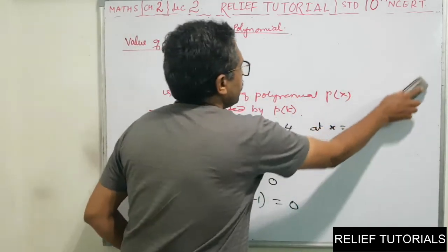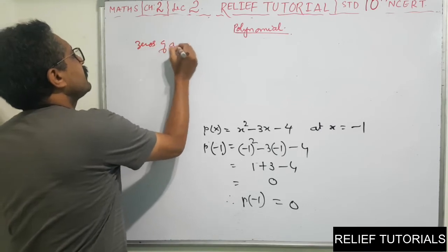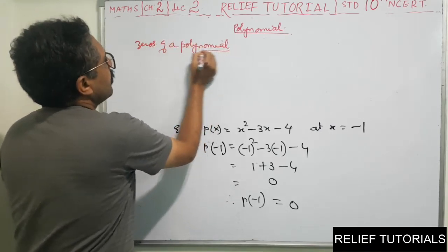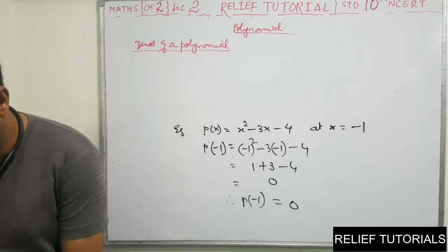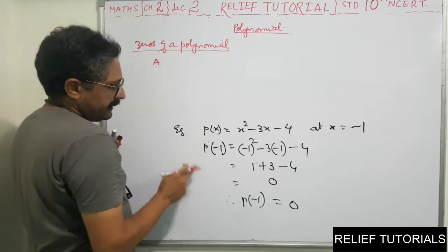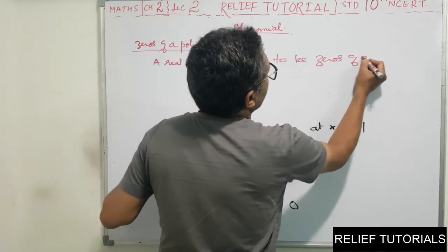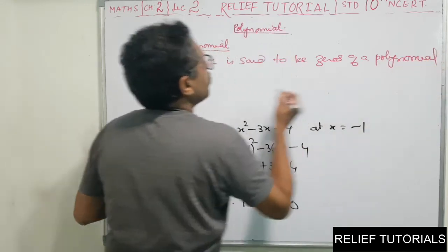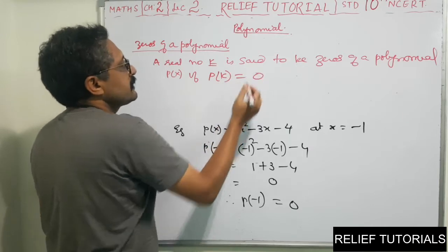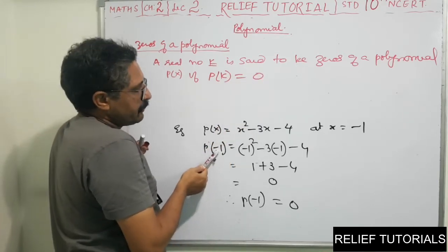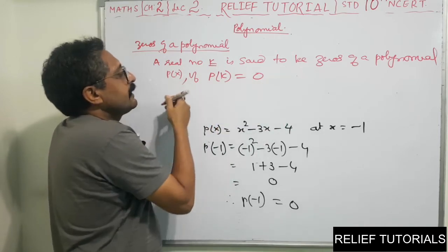Now we discuss zeros of a polynomial, a very important topic. A real number K is said to be a zero of a polynomial P of X if P of K equals 0. In our case, P of minus 1 equals 0, so minus 1 is a zero of the polynomial.